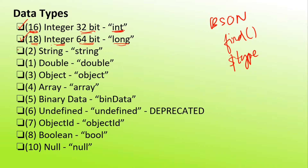The next data type is the most common one, which is string. The assigned number for the string data type is 2 and the alias name is 'string'. The next data type is double, which is a floating point number. The number assigned is 1 and the alias is 'double'. The next is the object data type, where embedded documents can be assigned as an object or variable. The assigned number is 3 and the alias is 'object'.